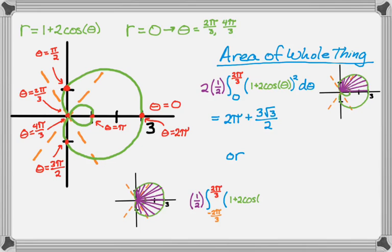And then we have the usual integrand, which is just r squared, and then dθ. So that's going to give me the entire area of the region.